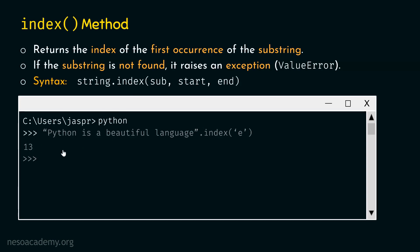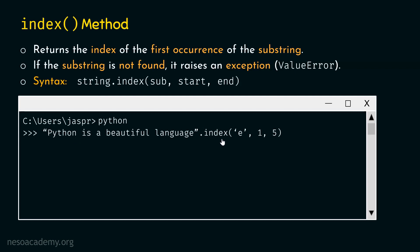Now let's see the second example: 'python is a beautiful language'.index('e', 1, 5). The start index is 1, meaning the search begins from the letter 'y', and the end index is 5, meaning the search must end at the letter 'n'. This means we are asking the index method to look for the character 'e' only within 'y', 't', 'h', 'o', 'n'. As you might have guessed, the index method will generate an error because this letter is not found within this range. Hence, we will get the message: ValueError — substring not found.